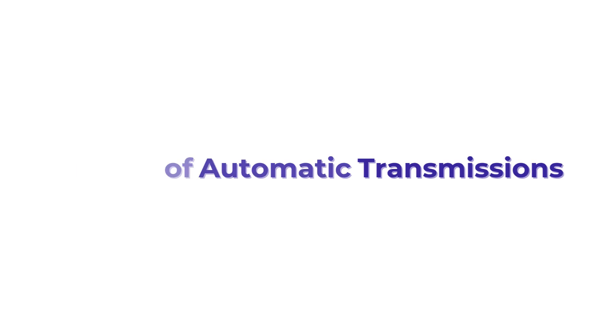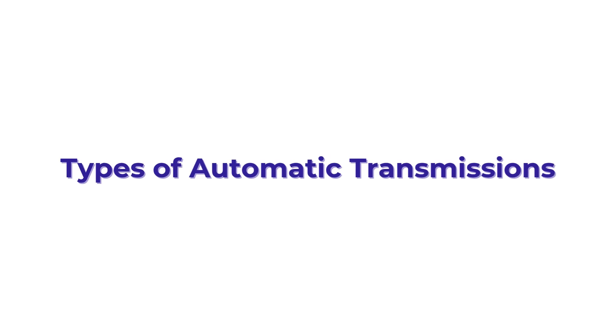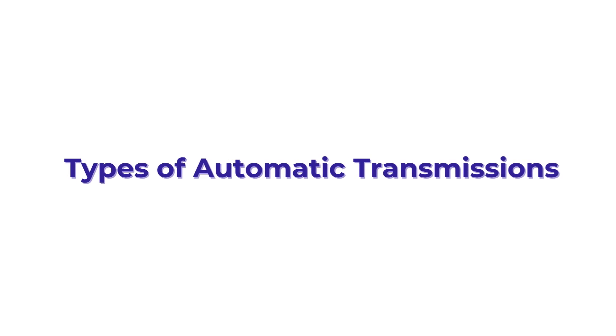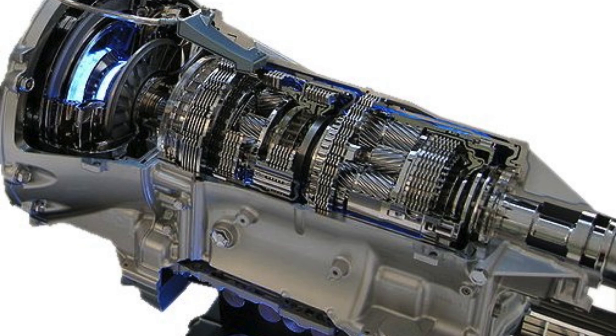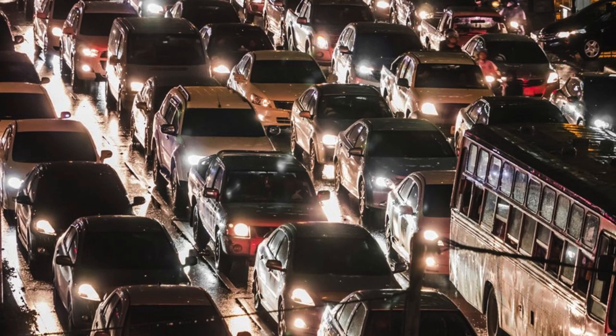Now let's review the main types of automatic transmissions found in modern vehicles. The Traditional Torque Converter Automatic is the most widely used type. It uses a torque converter and planetary gear sets, and has been the standard in most vehicles for decades.